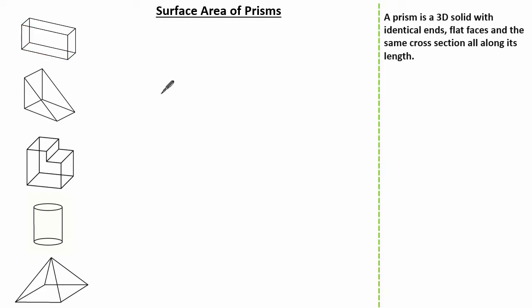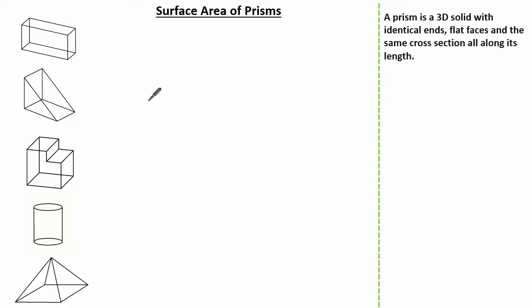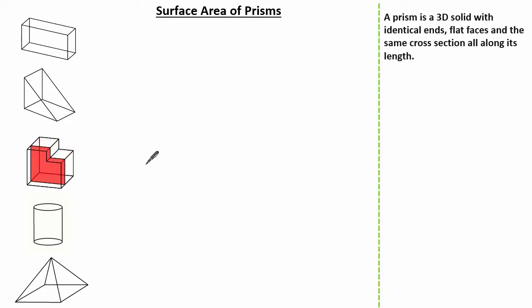The cross-sectional area doesn't change shape or size, so therefore a cuboid is a prism. This is what's known as a triangular prism. The cross-sectional area is the same throughout. The same can be said with the three-dimensional L-shape here — this is a prism as the cross-sectional area remains the same throughout the shape.